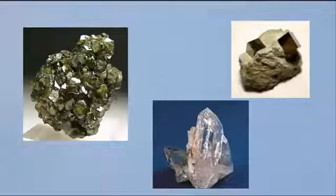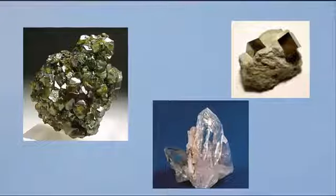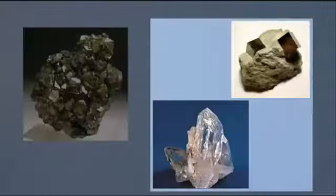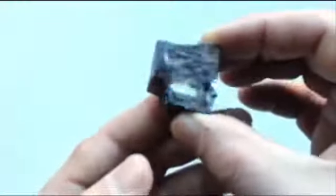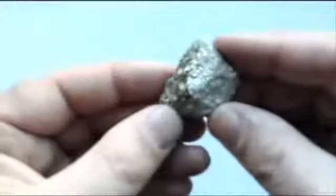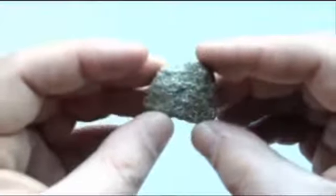Luster refers to how light reflects off of the surface of a mineral. For our class, we will be using two types of luster: metallic and non-metallic. Metallic minerals have a metallic appearance. What I mean is that they are gold or silver and actually look like a piece of metal, like this chunk of galena or this chunk of pyrite. Notice how they look like they are metal. So those have a metallic luster.